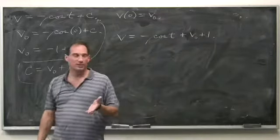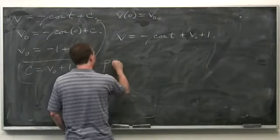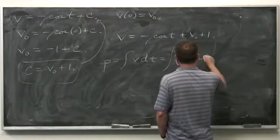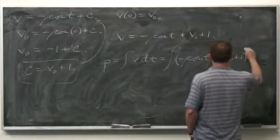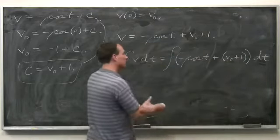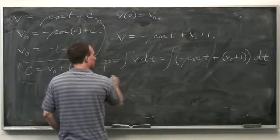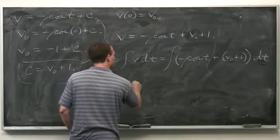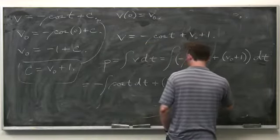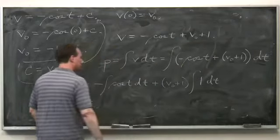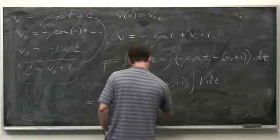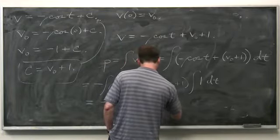Plugging that back in, the velocity is minus cosine of t plus v₀ plus 1. The position is the anti-derivative of velocity with respect to time — that's minus cosine of t plus (v₀ + 1) integrated with respect to t. By linearity, this gives minus the anti-derivative of cosine of t plus (v₀ + 1) times the integral of 1 dt.